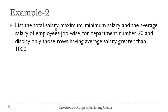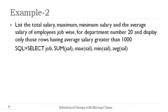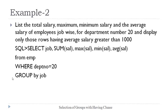In this example, we display total salary, maximum, minimum, and average salary of employees job-wise, for department number 20 only, showing rows where average salary is greater than 1000. We select job, SUM(salary), MAX(salary), MIN(salary), and AVG(salary) from the employee table. First, WHERE department_number = 20 selects only desired records. Then GROUP BY job makes the grouping. Then HAVING AVG(salary) > 1000 filters the groups. This is the final query combining all these clauses.